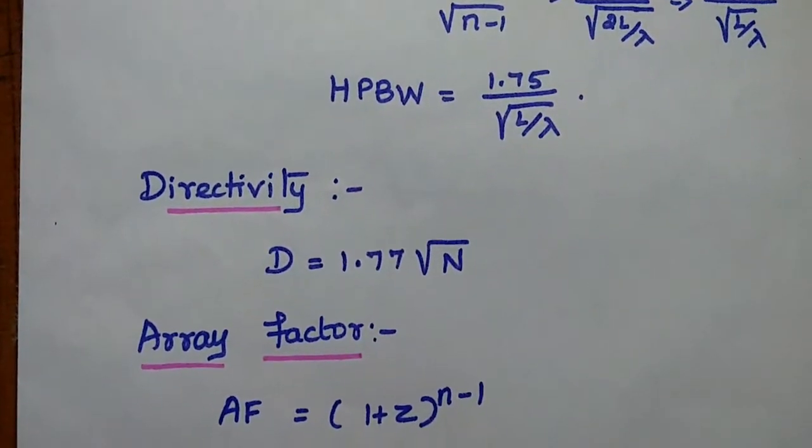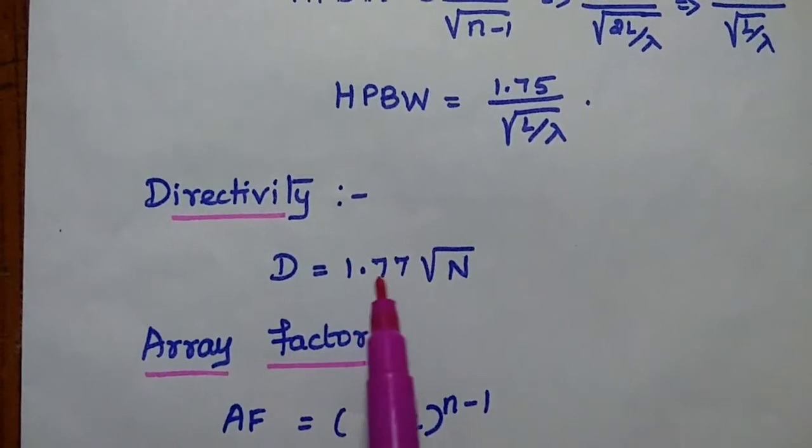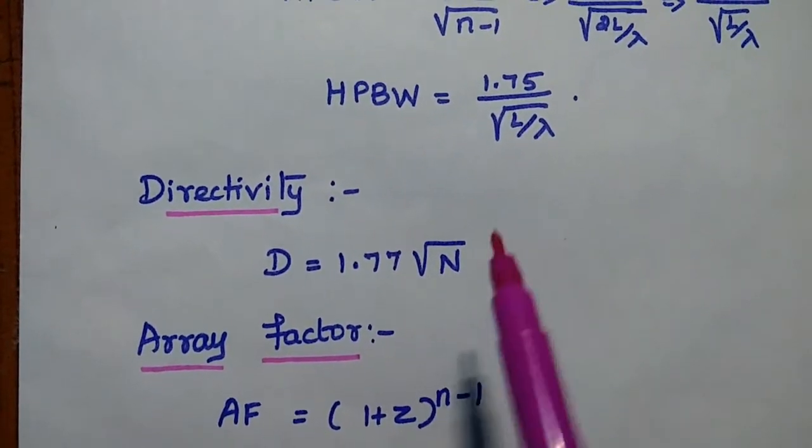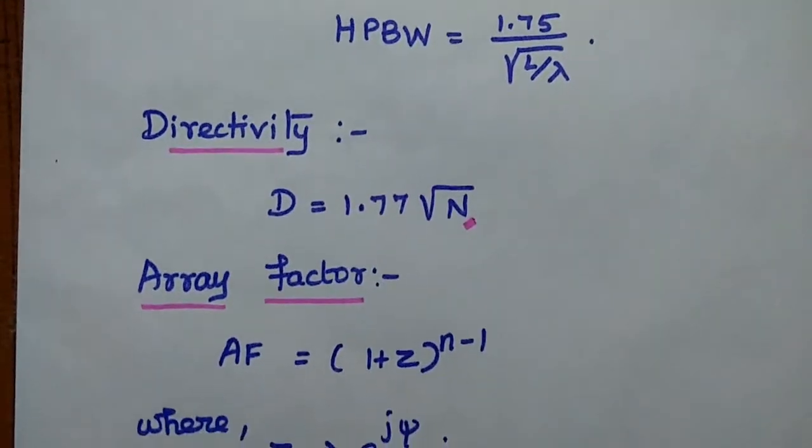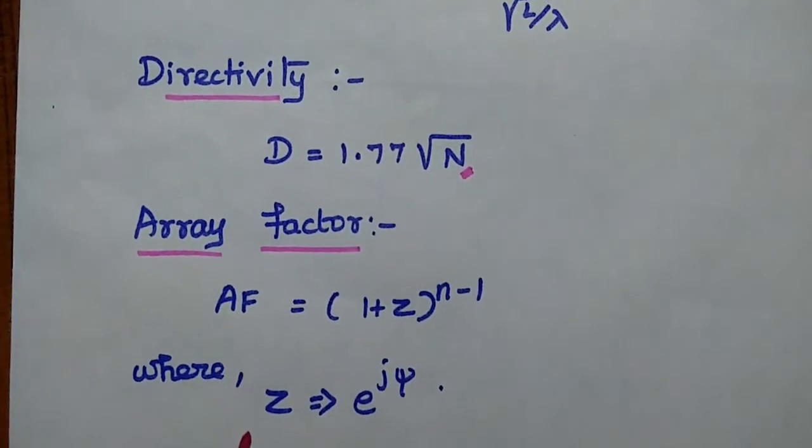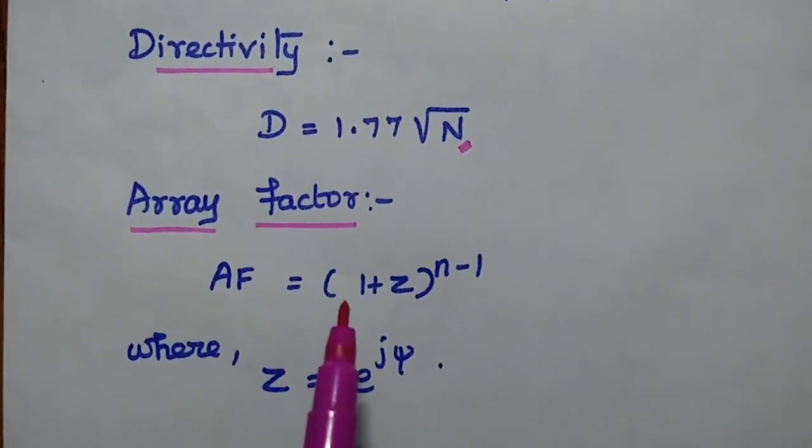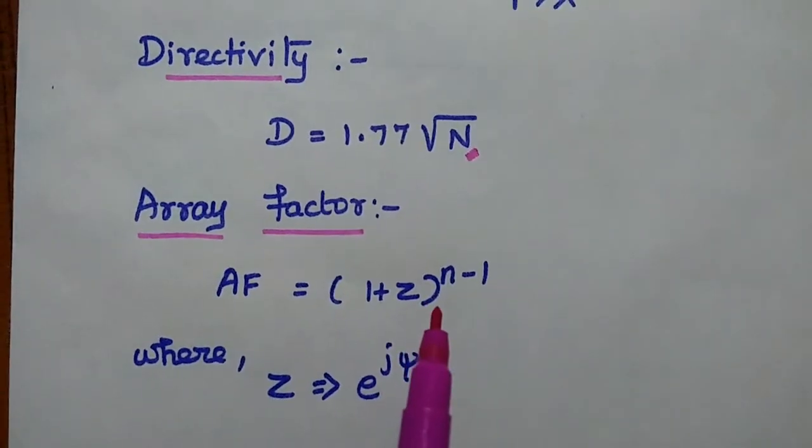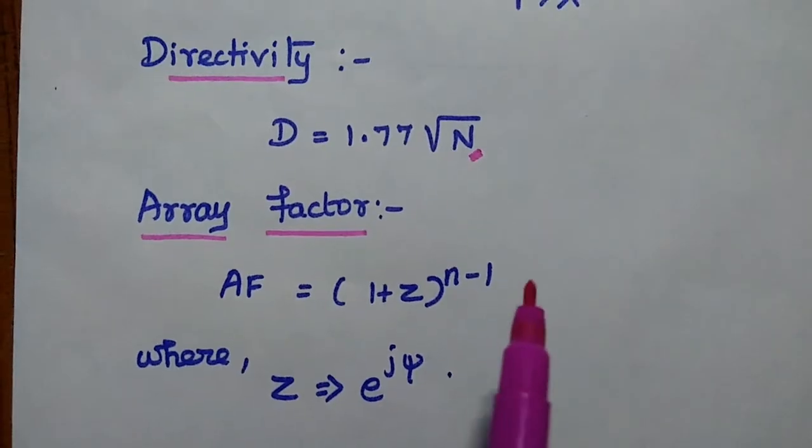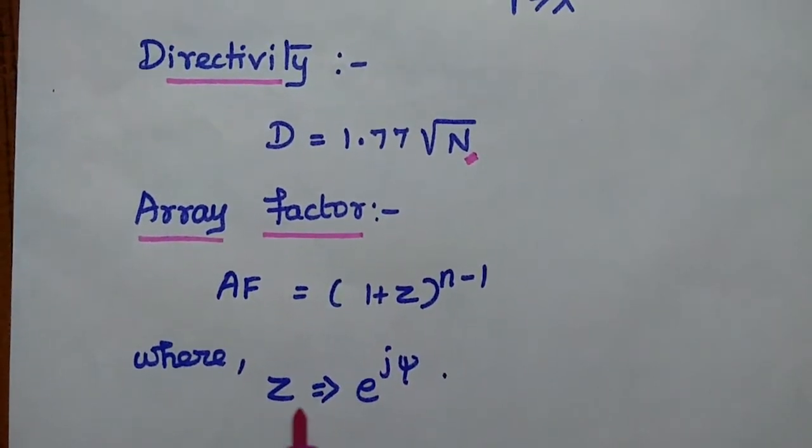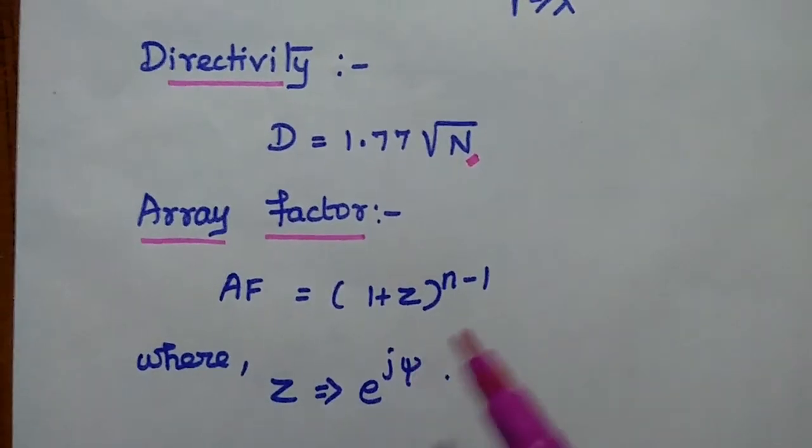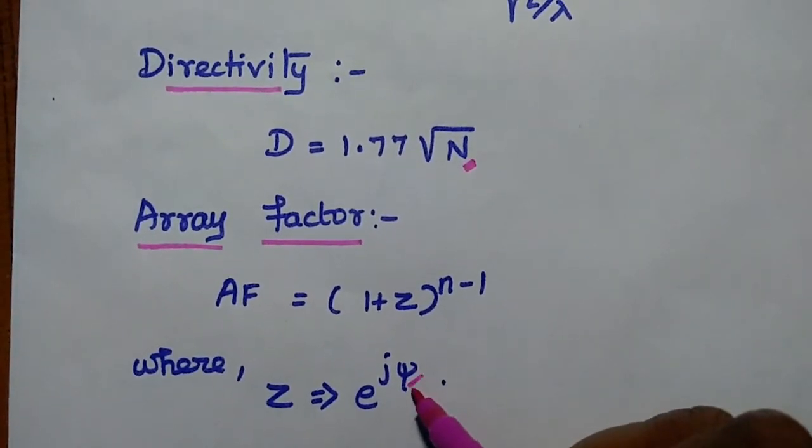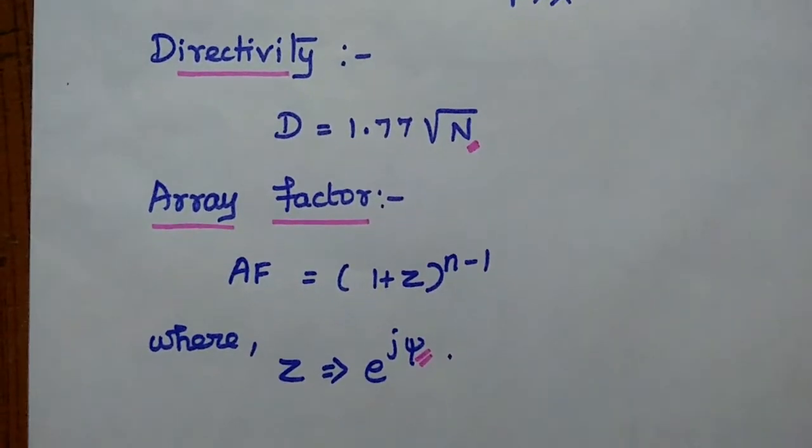Directivity of the binomial array is given as 1.77 times square root of n, where n is the number of elements. Array factor for the antenna is given as 1 plus z to the power n minus 1, where z is e to the power j times psi. Here, psi is the phase difference.